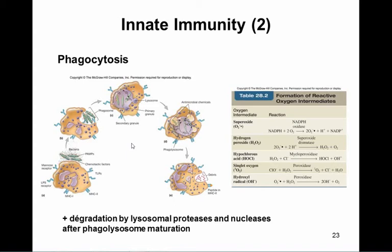Also involved in maturation is secretion of many hydrolases into the phagosome: proteases, nucleases, DNases, and RNases. Antibacterial peptides and lysozyme are also secreted. Antibacterial peptides disrupt the outer membrane, lysozyme destroys peptidoglycan, and proteases, nucleases, and lipases chemically digest the components of the bacterial cell.